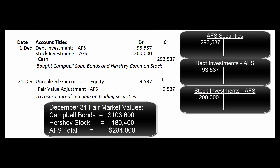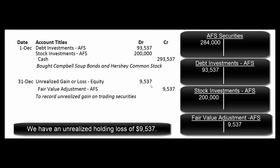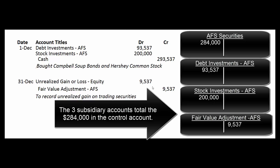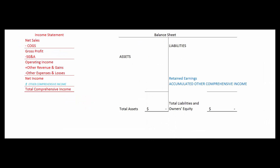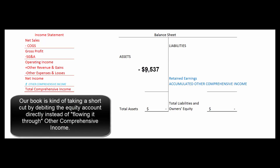December 31st rolls around and we discover the Campbell Soup bonds are now worth $103,600 and the Hershey stock has gone down to $180,400, for a total portfolio value of $284,000 — down by $9,537. So we book an unrealized gain or loss — equity entry, and reduce our portfolio by crediting the fair value adjustment account by $9,537. We keep the original cost accounts separate so we remember exactly what we paid. This unrealized loss slash equity means we have a debit that reduces the equity on our balance sheet.